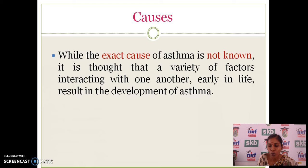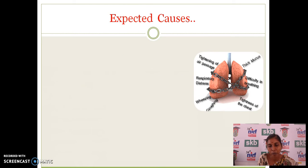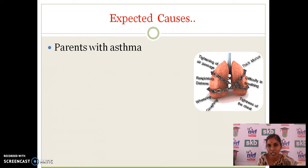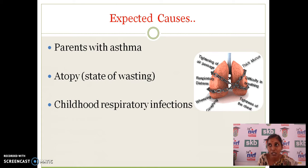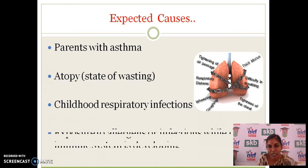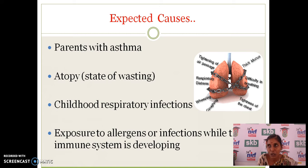We don't know the exact cause of asthma, though some causes are expected. If parents already have asthma, there is a chance the child may develop it. Also, a decrease in cell number in the airway leads to asthmatic conditions. Respiratory infections may cause damage to alpha-antitrypsin, also leading to asthma. Additionally, allergens, pollens, or infections trigger the immune system and cause the release of mucus in the airway, leading to asthmatic conditions.